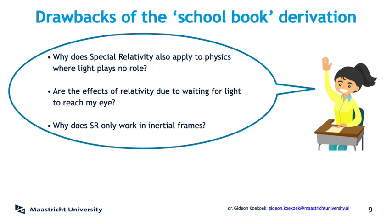Finally, our schoolbook derivation tends to give the impression that special relativity only holds when things move with constant velocity. But that's wrong — special relativity holds for accelerating objects perfectly fine. Otherwise, at particle accelerators, people wouldn't be allowed to use special relativity to begin with. No, special relativity holds when an observer is in an inertial frame. If you are in a non-inertial frame, you will need general relativity. But none of this is clear from the schoolbook derivation — it's in there somewhere, buried deep in the usage of Maxwell's equations, because those only hold in inertial systems.